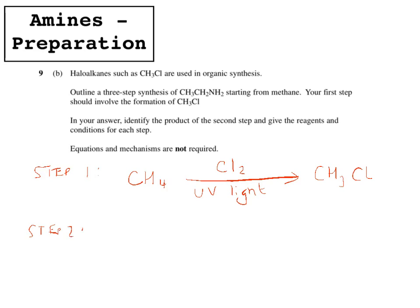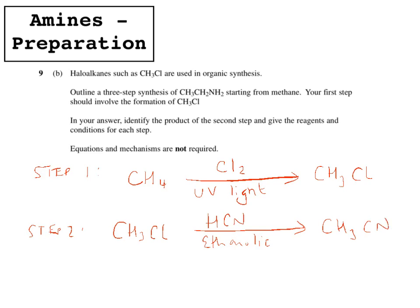Step 2 involves turning CH3Cl into something else. If you notice, the final product has an extra carbon compared to CH3Cl. Whenever you need to add an extra carbon, you have to go via a nitrile — that's the only way to add a carbon. So here you use HCN, which needs to be ethanolic (dissolved in ethanol). What you'll get is CH3CN; it basically replaces your chloride ion.